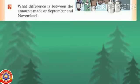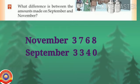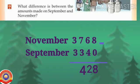The amount got in September was 3340 rupees. The amount got in November was 3768 rupees. To find the difference, subtract 3340 from 3768: 8 minus 0 is 8, 6 minus 4 is 2, 7 minus 3 is 4. The answer is 428. What is the difference between the amounts made in September and November? 428 rupees.